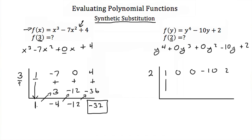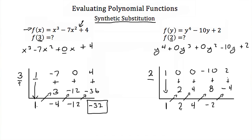Carry down the 1. Multiply by 2: 2 × 1 = 2. Add: 0 + 2 = 2. Then 2 × 2 = 4. Add: 4 + 0 = 4. Then 2 × 4 = 8. Add: 8 + (−10) = −2. Then 2 × (−2) = −4. And −4 + 2 = −2. So our solution for this polynomial function when y = 2 is negative 2.